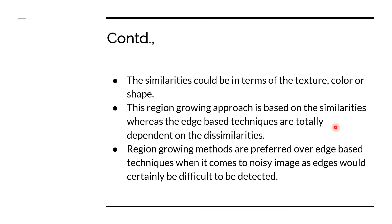That's what is called the region growing method — very simple. The similarities I look for could be texture, color, or shape. The region growing approach is fundamentally based on similarities. In contrast, edge-based techniques are totally different — they are based on dissimilarity. With edge-based techniques, objects are identified based on dissimilarity. Here, I group things based on similarities, and that's the major difference between region-based and edge-based techniques.